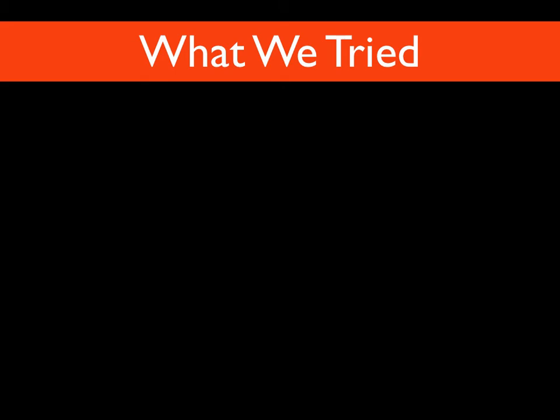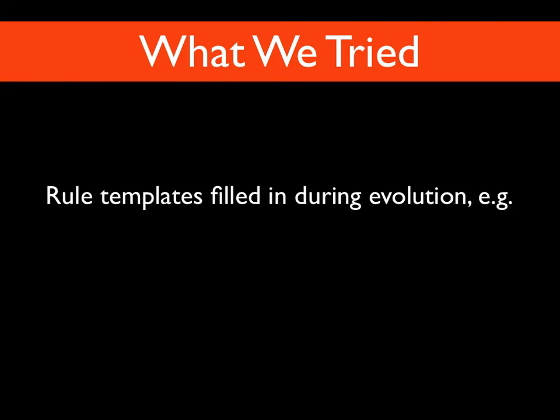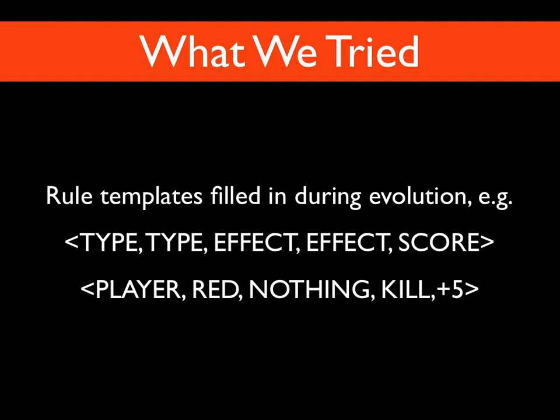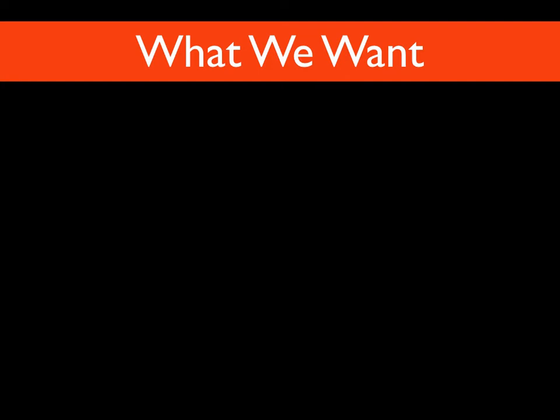In the past, we tried to generate rules and mechanics using Angelina through arcade games, using rule templates that we filled in during the course of the game's design. A rule template might define: when an object of the first type, like 'player', collides with an object of the second type, like 'red', then apply an effect to the first object, apply a second effect to the second object, and add the score. But that's lacking a lot of what makes mechanics interesting, and from a creativity perspective it's very uninteresting.